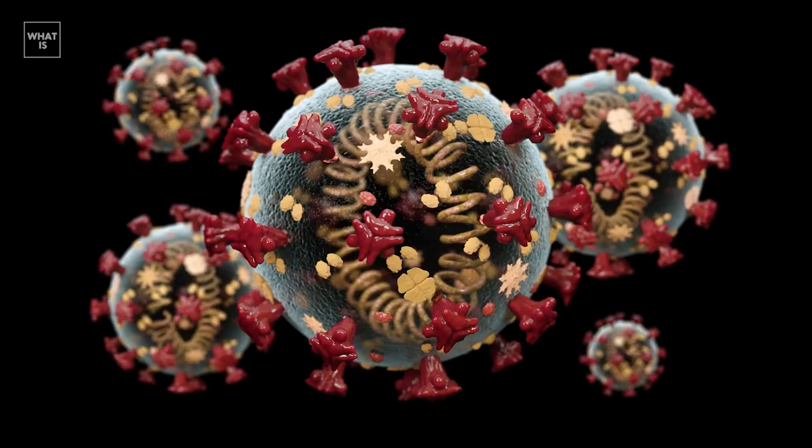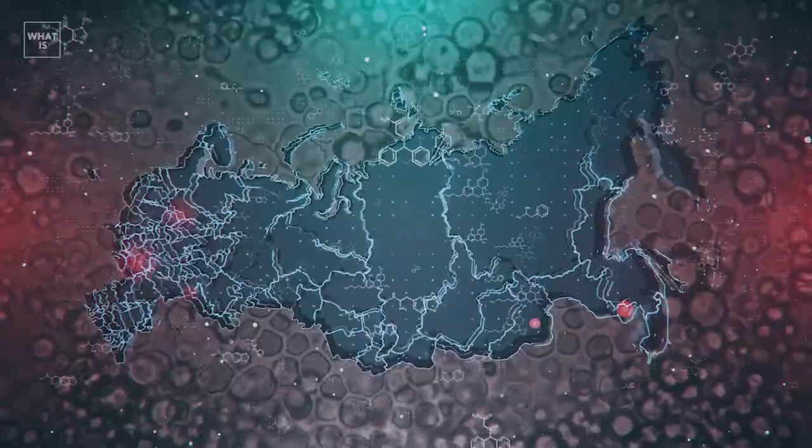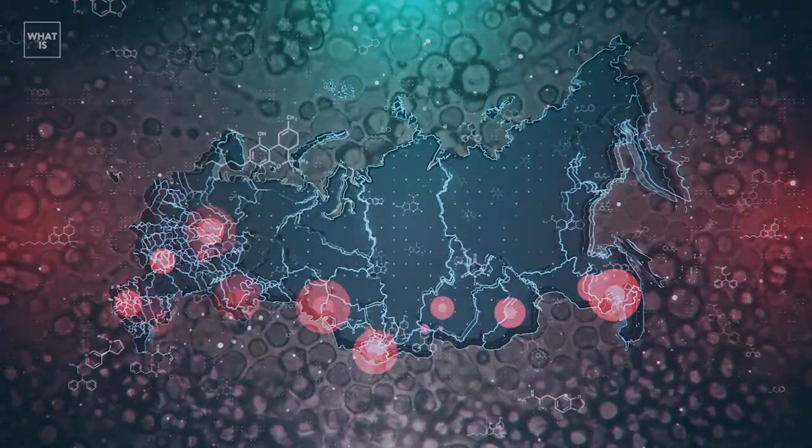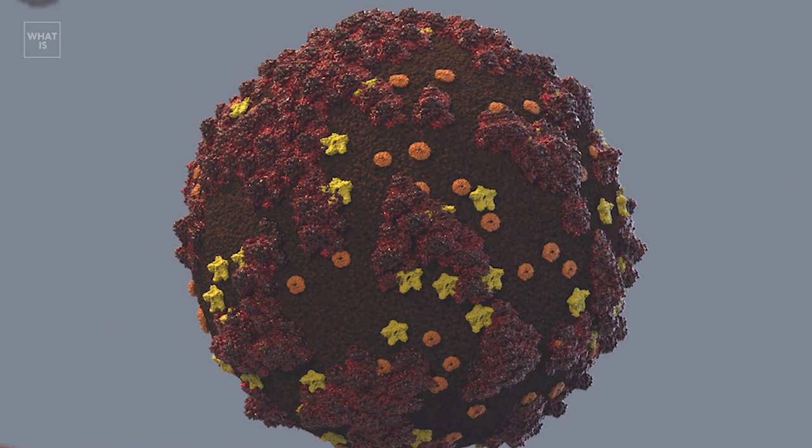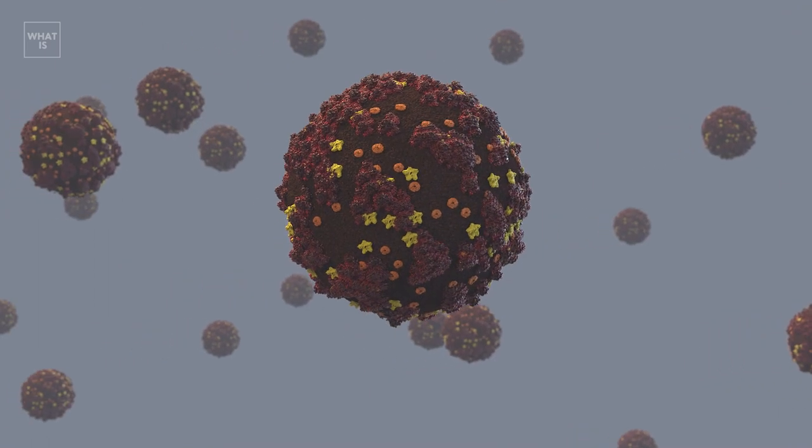Scientists have found out that Omicron contains more than 50 mutations compared to the reference variant of the coronavirus. At the same time, it became clear that 50 additional mutations were not derived from the Delta strain, which was the source of two outbreaks in Russia. Just imagine, Omicron is not a follower of the Delta, but a completely new independent version of the virus.